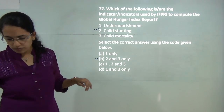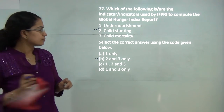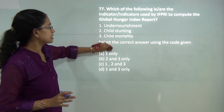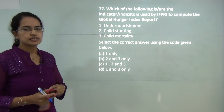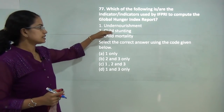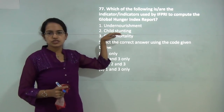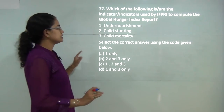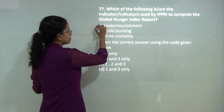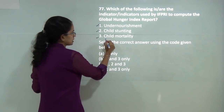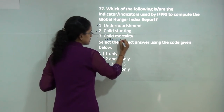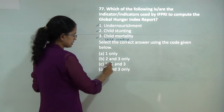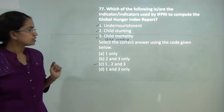The next question: the Global Hunger Index includes four parameters — undernourishment, child stunting, child wasting, and child mortality. All of these are correct, and so 1, 2, and 3 would be the correct option.